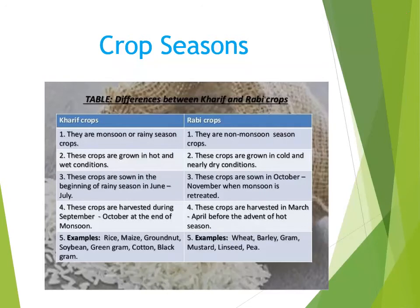What is the basic difference between Kharif and Rabi crops? Kharif crops are monsoon or rainy season crops — we sow these crops during the monsoon season. On the other hand, Rabi crops are non-monsoon season crops.